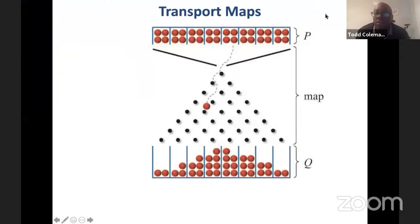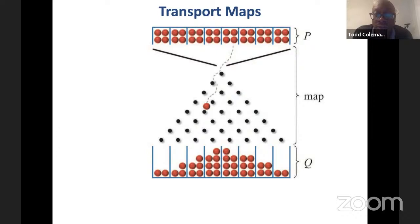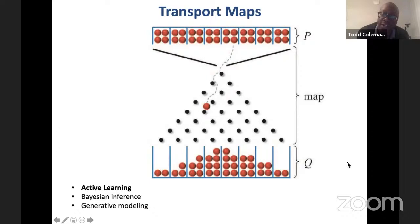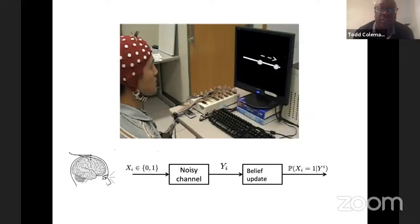The high-level topic of my talk is going to be on what I call transport maps. The high-level idea is: suppose that I have a bunch of balls uniformly distributed up top, and I have to generate some type of board such that the force of gravity will have them take on a new shape. So P is up top and Q is down below — that's what a transport map is. There are applications in active learning, Bayesian inference, generative modeling, and control.